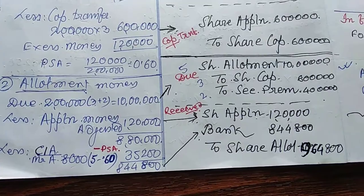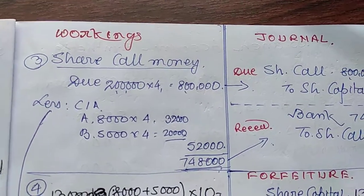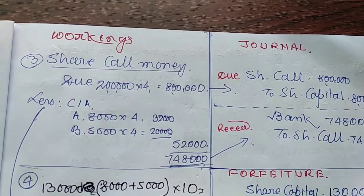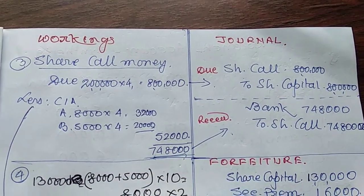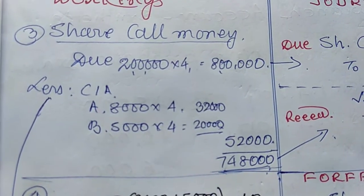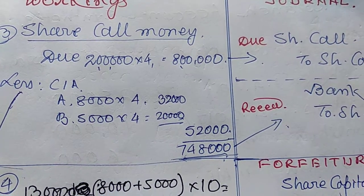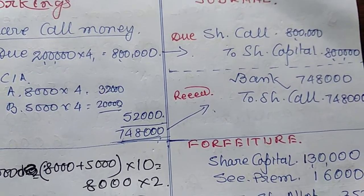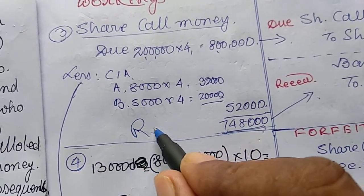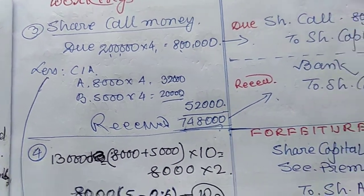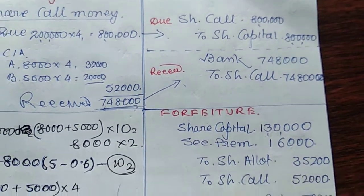Now we go to the call. Call due is very easy — at the rate of Rs. 4, it is Rs. 8 lakh. Call scenario: for Mr. A it is 8,000 into 4, for Mr. B it is 5,000 into 4, so total call scenario is Rs. 52,000 to be deducted. Actual amount received is Rs. 7,48,000. Journal: bank account debit to first call.